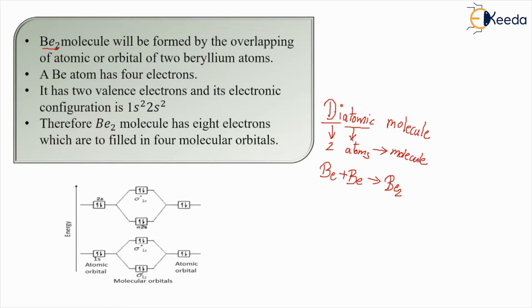So BE2 molecule will be formed by overlapping of atomic orbital of two beryllium atoms. A BE atom has four electrons. Let's do the electronic configuration. Since it has four electrons it will be 1s2 and then it will go to 2s2, 1s2 and 2s2.